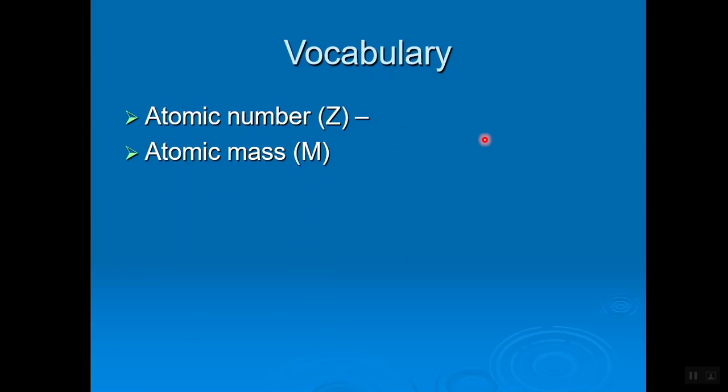The atomic mass is the number of protons plus the number of neutrons. Electrons are so tiny we don't even count them up. The atomic mass, which is represented by the letter M, is the number of protons plus the number of neutrons. So far so good. We're almost done.